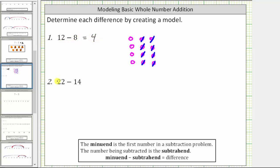For our last example, we have 22 minus 14. We begin by modeling 22 with 22 small circles. This time, let's use 5 small circles per column.